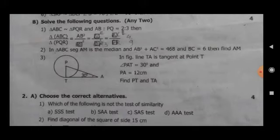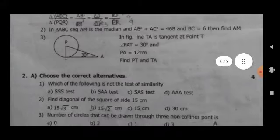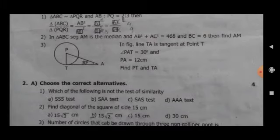Third, in figure line TA is tangent at point T. Angle PAT is equal to 30 degrees and PA is equal to 12 cm. Find PT and TA.